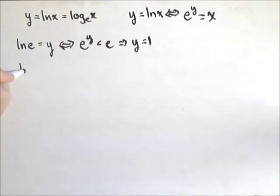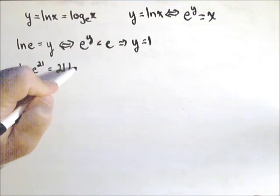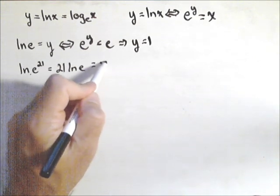Now what if we had natural log of e to the 21st? A couple different ways we could approach this, but when this base and this base are the same for any logarithm, it's equal to the exponent. The other thing we could think of is pulling the exponent out front, and we have 21 times the natural log of e, but the natural log of e is just 1, so it equals 21.